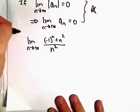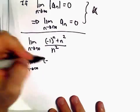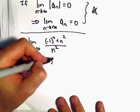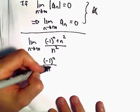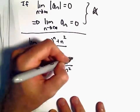All we're going to do is break this up using some algebra. So we can write this as the limit as n goes to infinity of (-1)^n over n^2 plus n^2 over n^2.